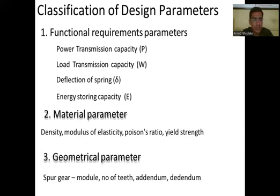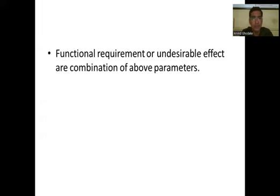The third classification is geometrical parameters. For example, for a spur gear, geometrical parameters include module, number of teeth, addendum, dedendum, etc. The functional requirements and undesirable effects are combinations of the above parameters. In this session we discussed what parameters to reduce in optimum design — cost, weight, etc. — and what parameters to maximize — power requirement, load carrying capacity, etc.